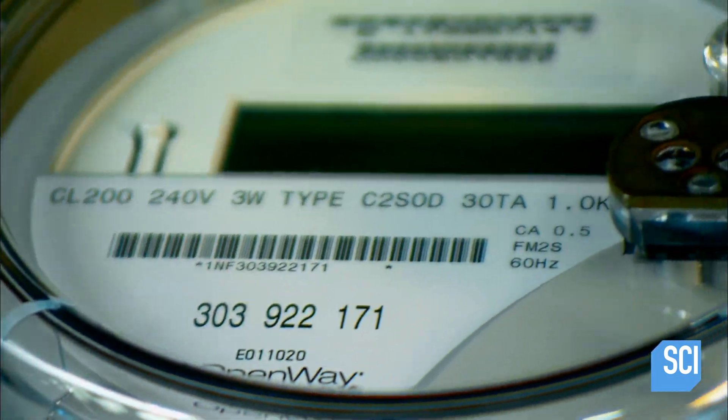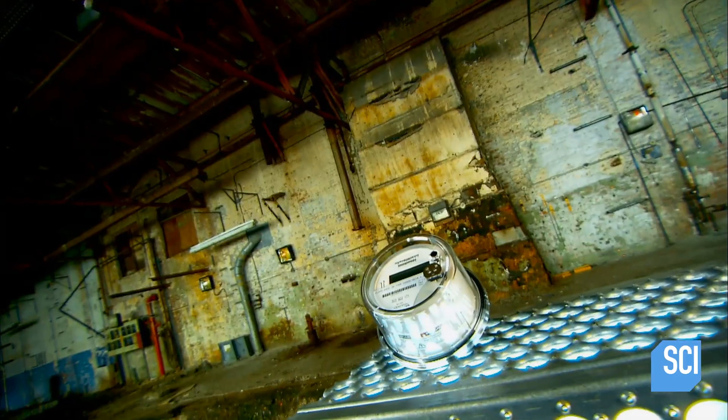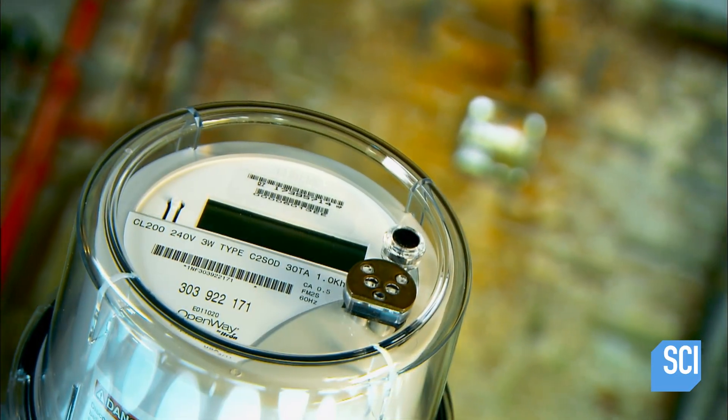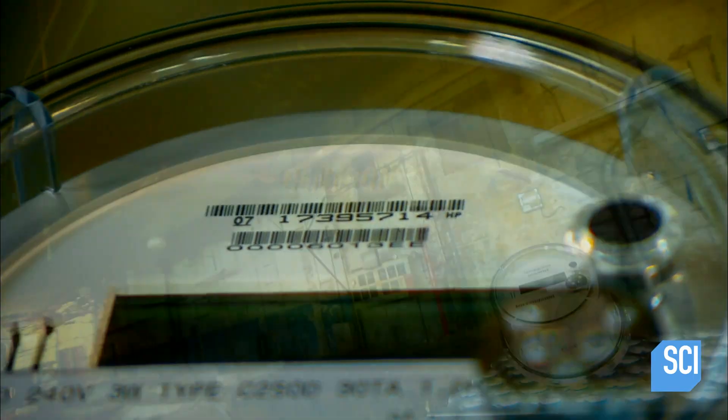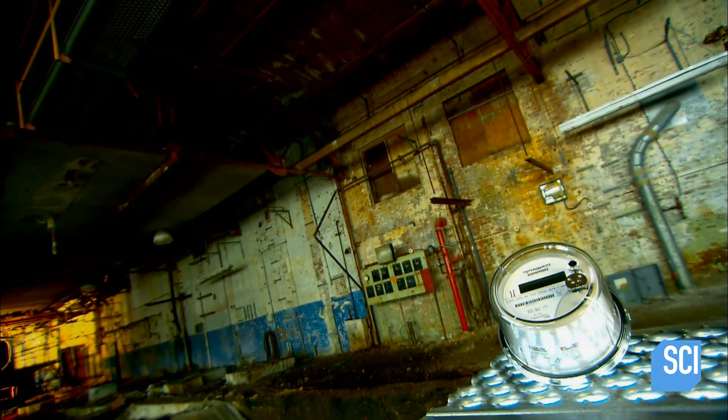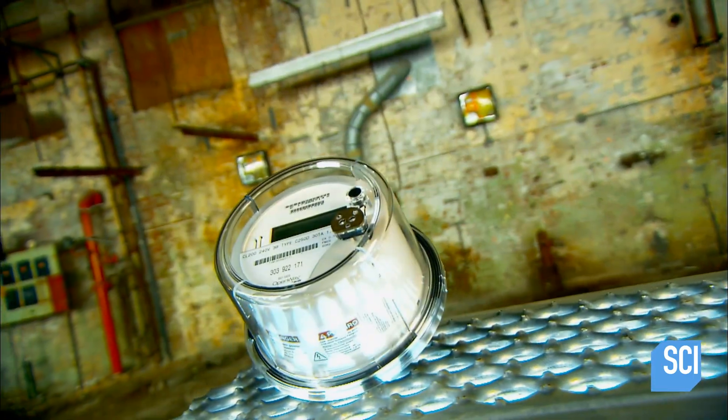Smart meters are electricity meters that don't have to be read by a person. Instead, they wirelessly send your home's electricity use to your utility in real time. Your bill then shows how much electricity you used and when, making it easier to better control your energy use.